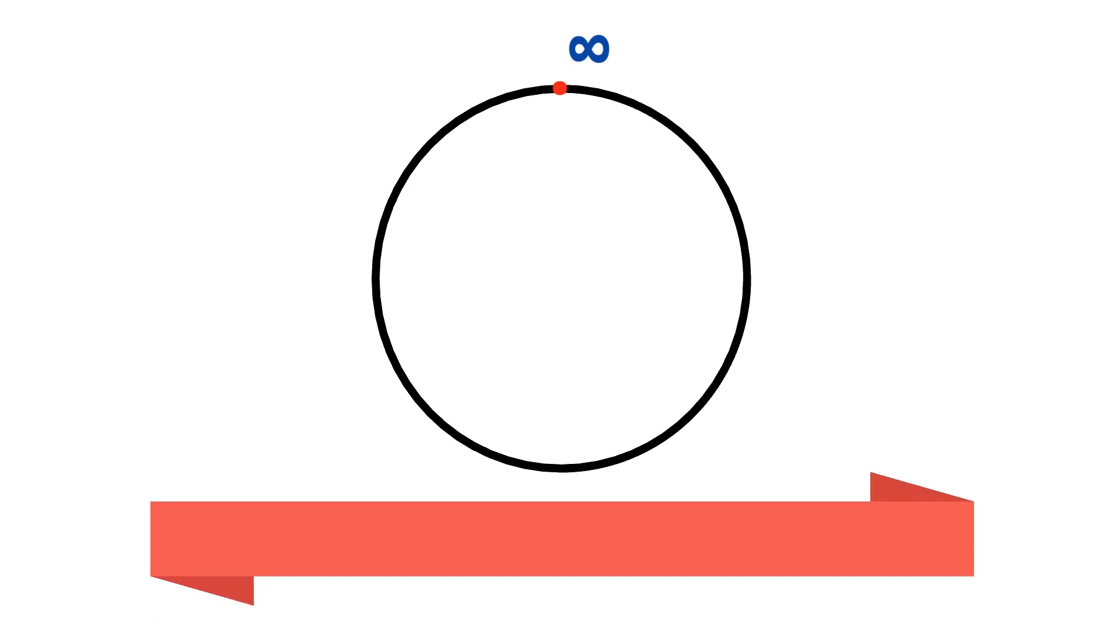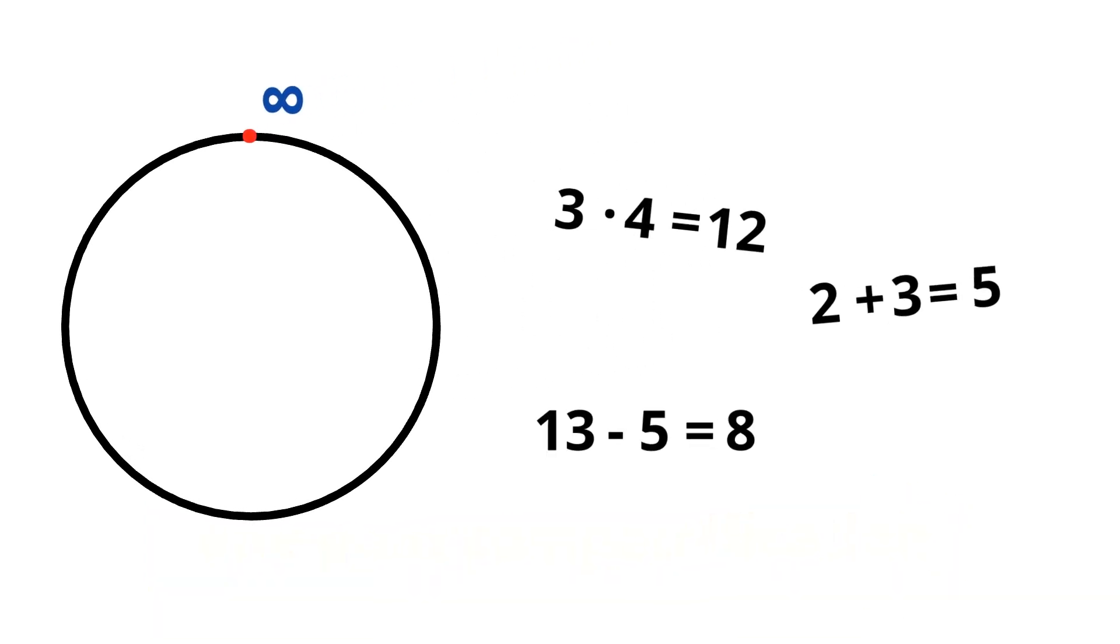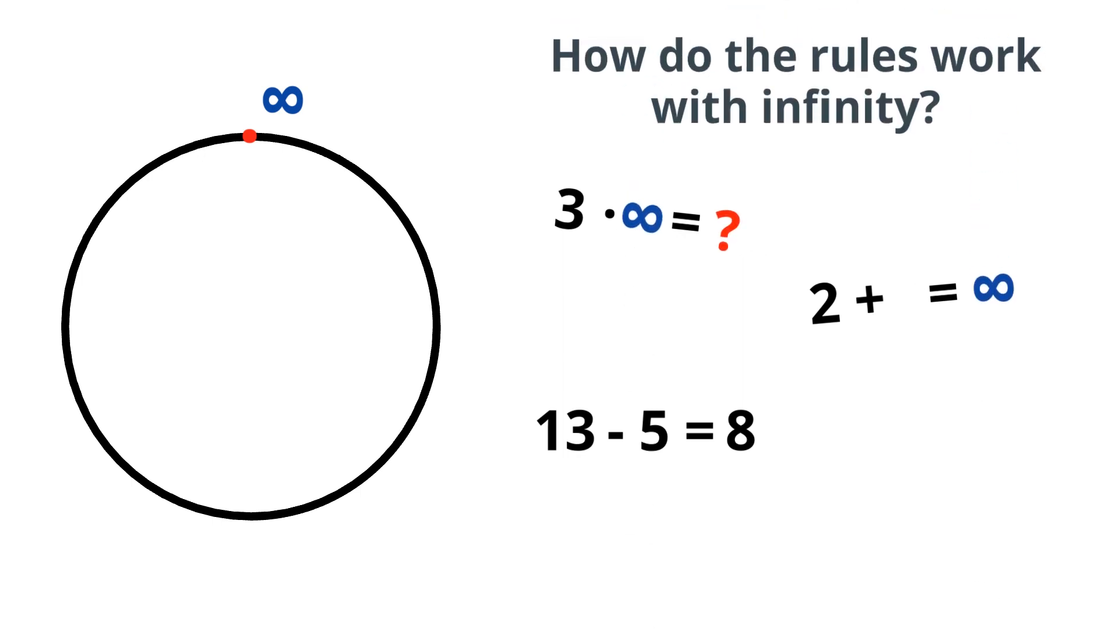As a fun fact, this is called a one-point compactification of the real line. Under this new structure we can still add, subtract, or multiply the usual numbers. But we must also assign meaning when using these operations with our brand new point. So let's do just that.